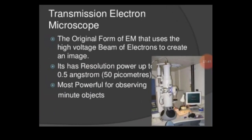Transmission electron microscope is the original form of electron microscope that uses a high voltage beam of electrons to create an image. It has a resolution power up to 0.5 angstroms and is the most powerful for observing minute objects.